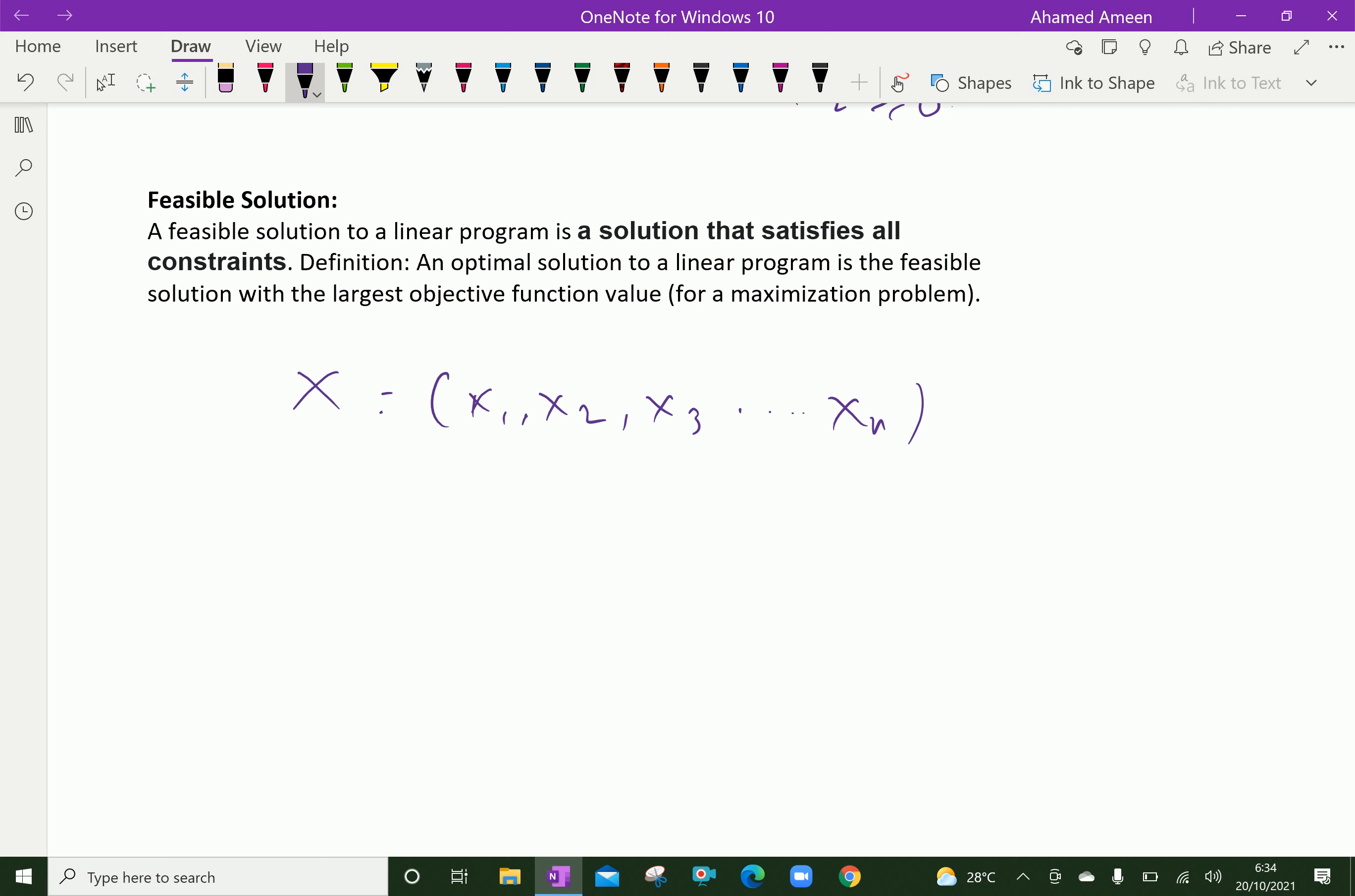For example, X has the solution 5, 0 is a solution of the following linear programming problem. So we have to get a particular value for those variables. That is, X equal to 5, 0 is a particular value that is called a solution of this programming.